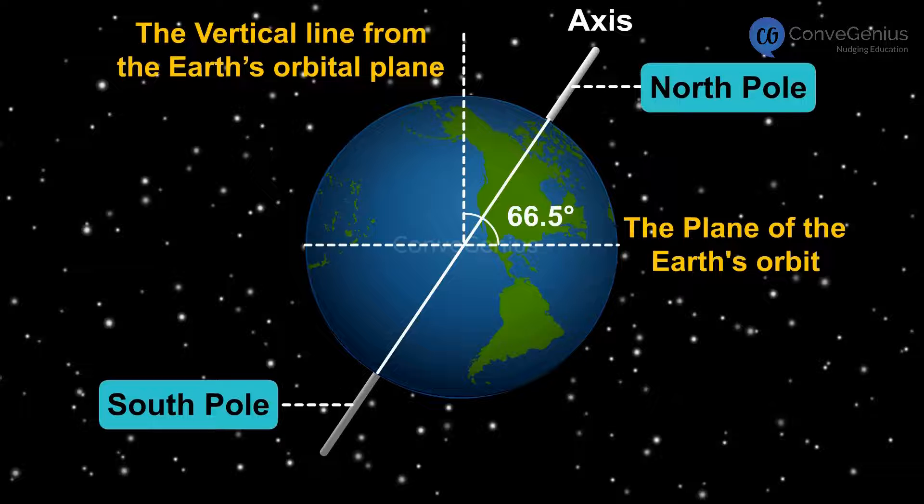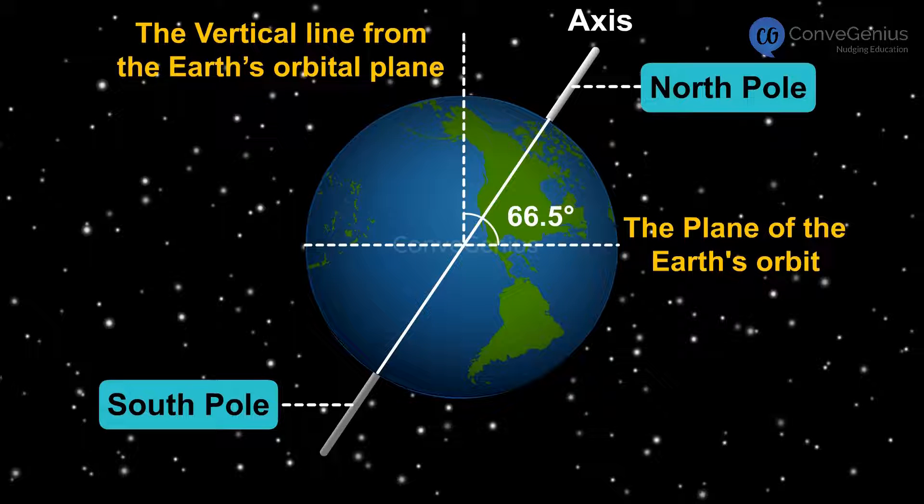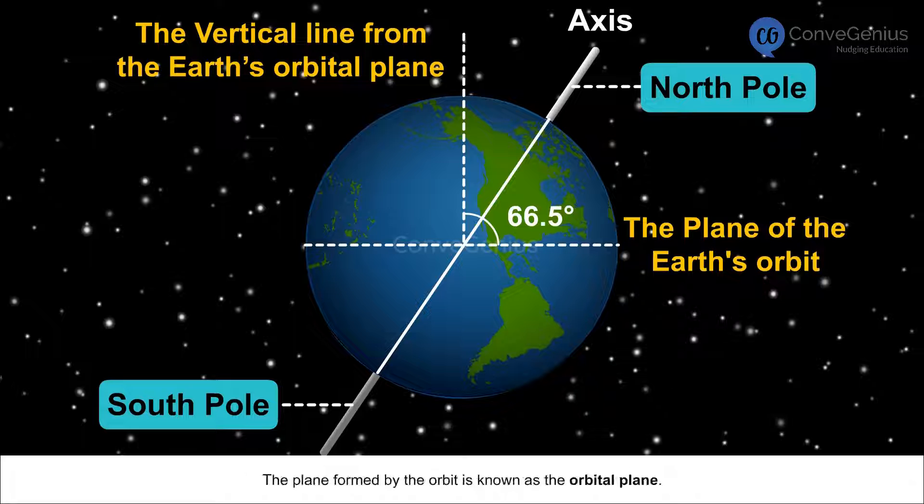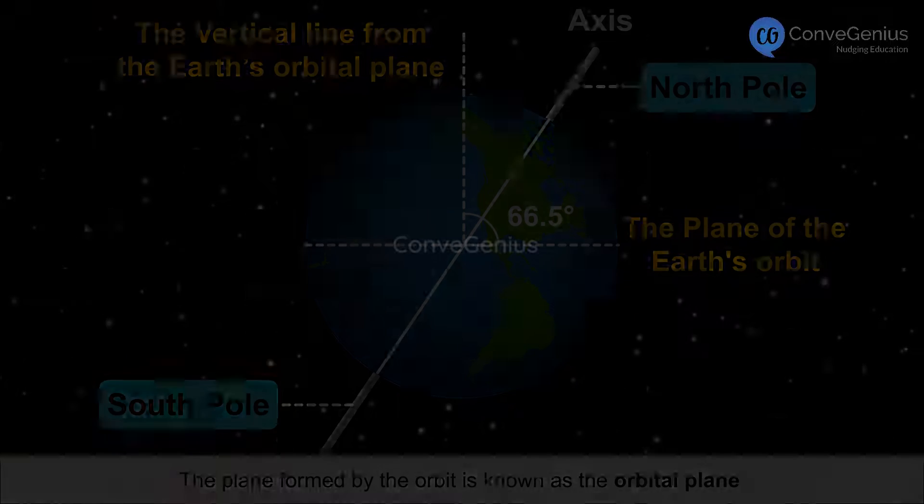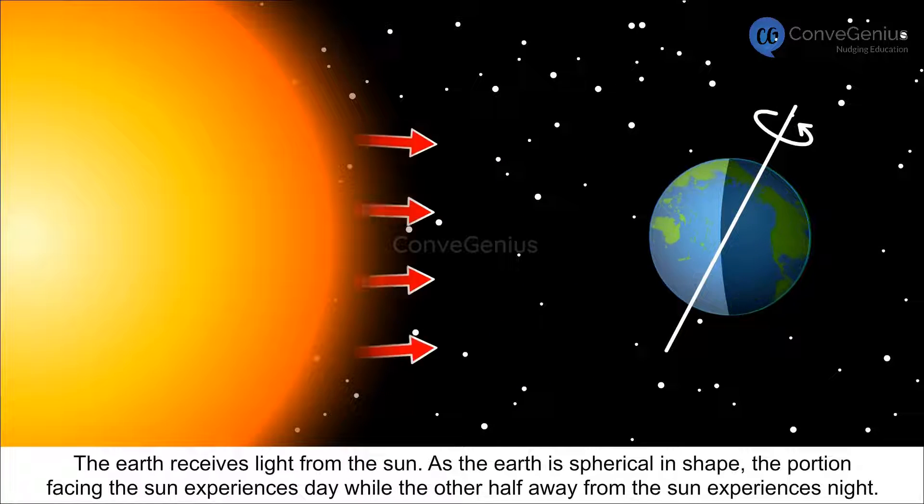The axis of the Earth is an imaginary line that makes an angle at 66 degrees with its orbital plane. The plane formed by the orbit is known as the orbital plane. The Earth receives light from the Sun.